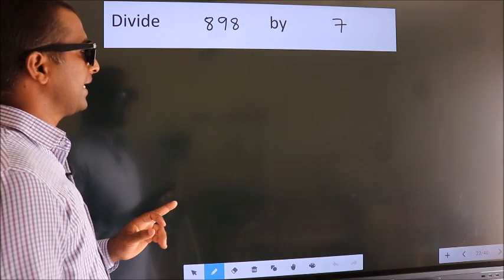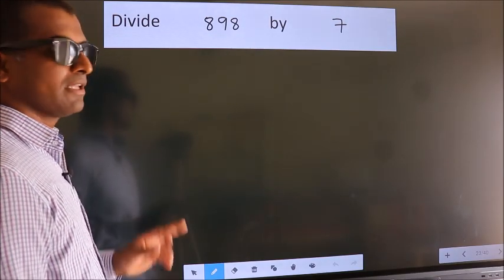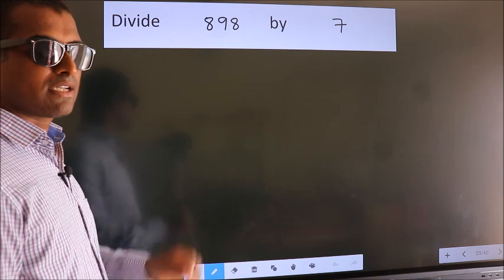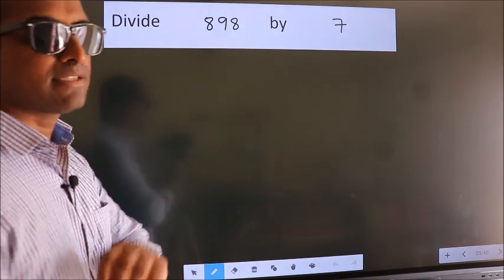Divide 898 by 7. To do this division, we should frame it in this way.